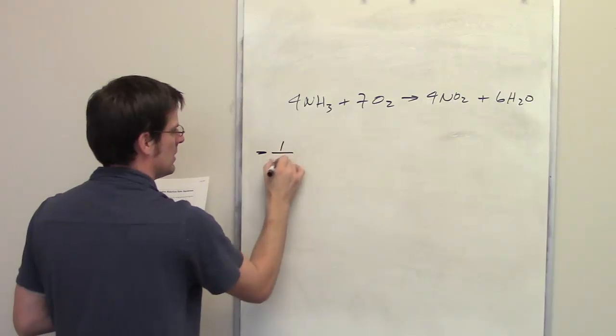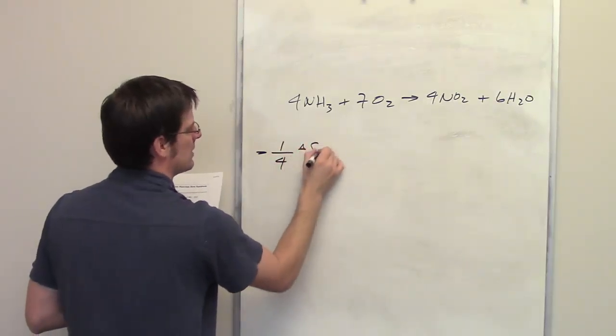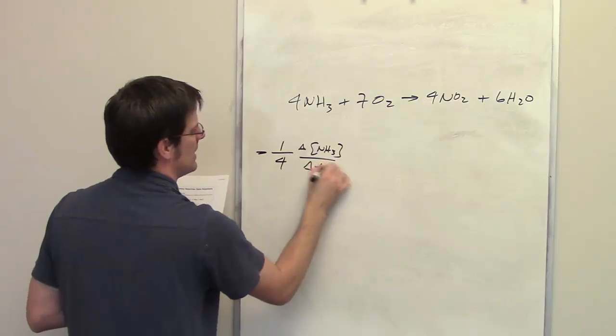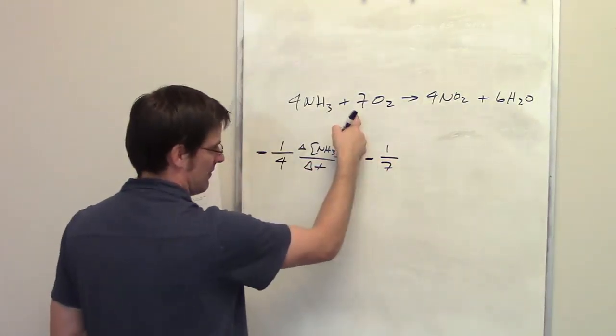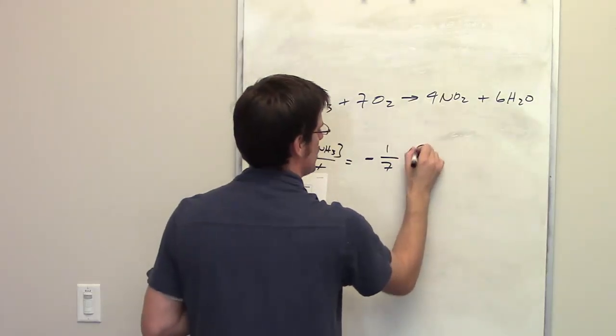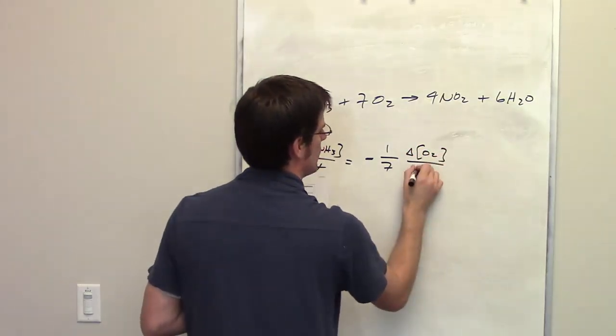coefficient, which is 4, times the change in concentration of ammonia over delta t. This equals negative 1 over the coefficient 7 multiplied by the change in concentration of oxygen over delta t,